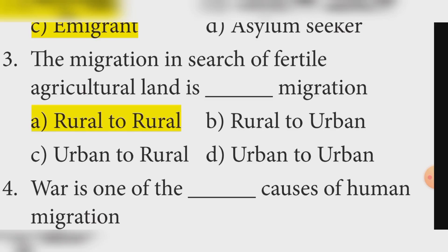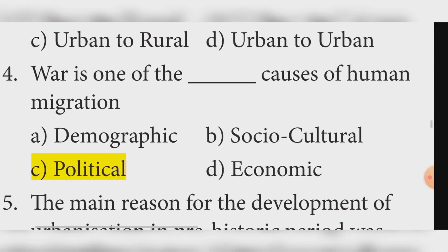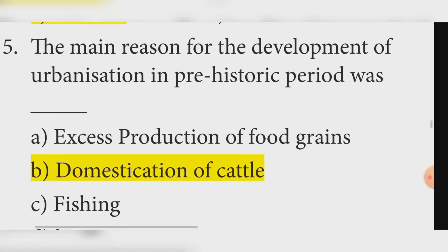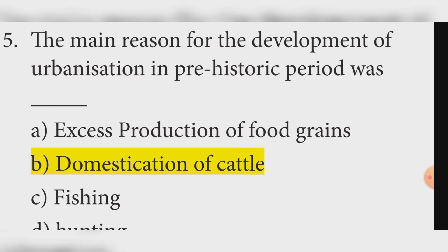Fourth: War is one of the causes of human migration. Answer: Option C — Political cause. Fifth: The main reason for the development of urbanization in the prehistoric period was? Answer: Option B — Domestication of cattle.